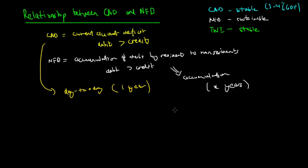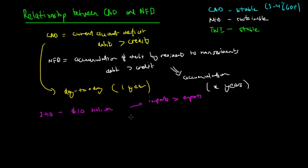For example, when the CAD for 2010 is $10 billion, we owe our trading partners $10 billion worth of goods or services. We're importing more than we're exporting, or we owe interest on investments that they have made in our country — that is, imports greater than exports, or income debits greater than income credits. That's a cause of our $10 billion deficit. And let's say our net foreign debt for that year is around $60 billion.